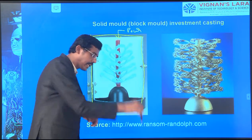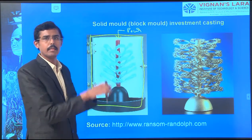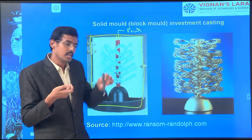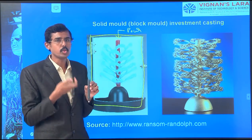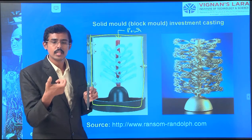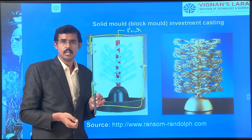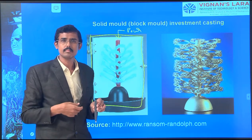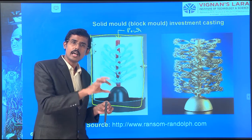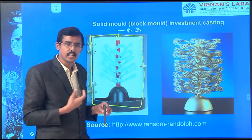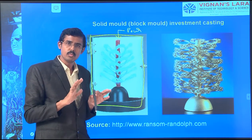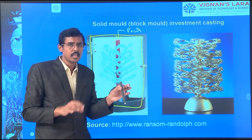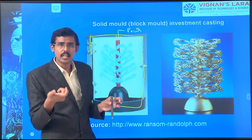After drying, we dip again and take out. From 2 mm it becomes 2.5 mm of slurry thickness. Again dipping - from 2.5 mm to 3.5 mm, 4 mm thickness of slurry increased. Now this increased thickness acts as a pattern. We get the design from the wax, and over the wax we created the slurry. Now the work of this wax is over. Therefore, we heat it up - the wax comes out and the cavity with the slurry is available.